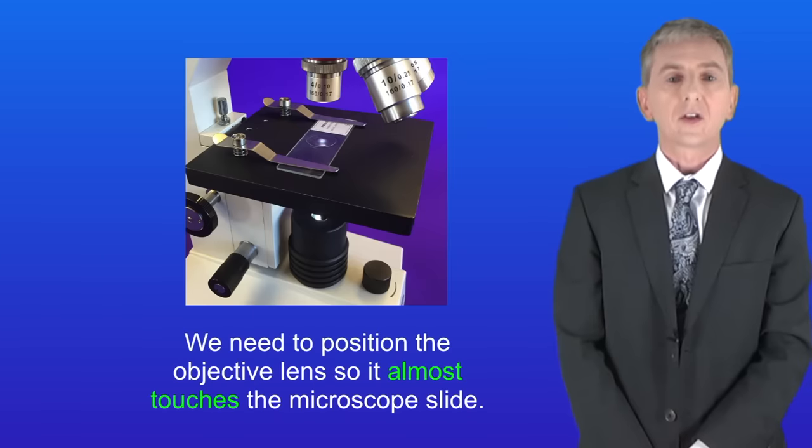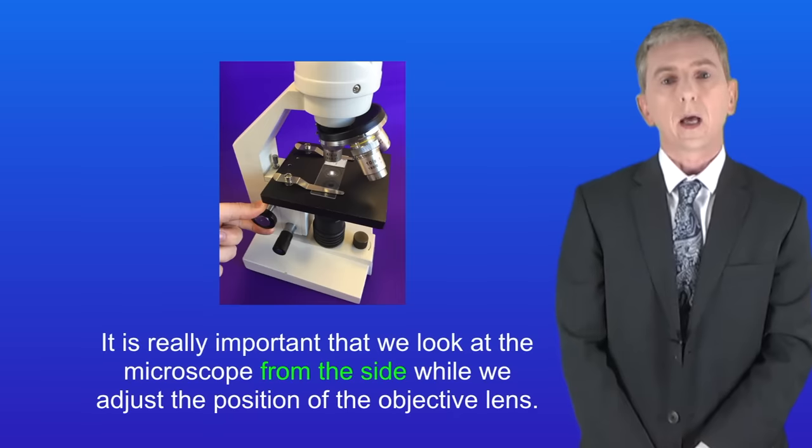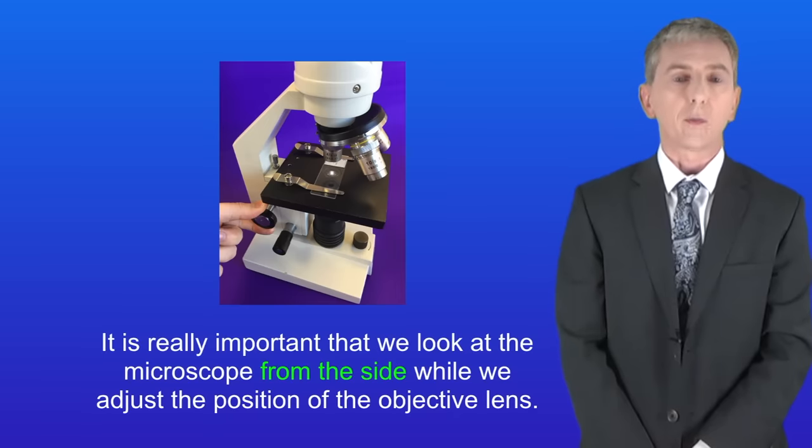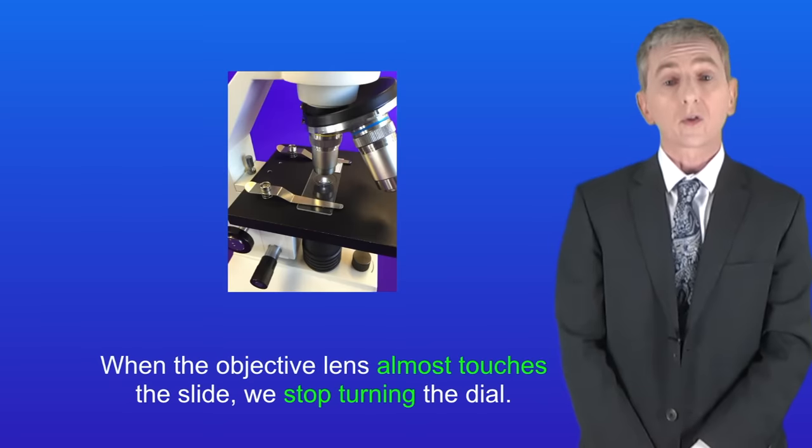We need to position the objective lens so it almost touches the microscope slide. To do that we slowly turn the coarse focusing dial. Now it's really important that we look at the microscope from the side while we adjust the position of the objective lens. When the objective lens almost touches the slide we stop turning the dial.